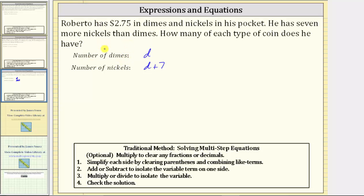So each dime is worth 10 cents and each nickel is worth 5 cents. And the total value of $2.75 is equivalent to 275 cents. Again, the only benefit of using cents rather than dollars is that we can avoid decimals in the equation.